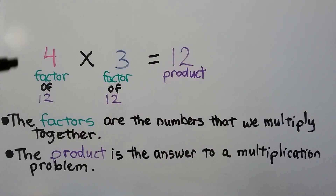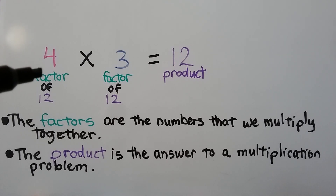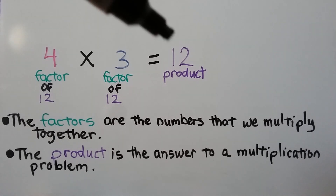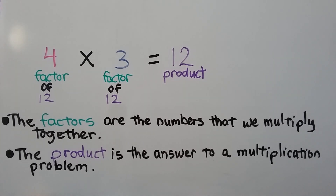The four is how many groups we have, and four is a factor of this product twelve. Three is how many is in each group, and it's also a factor of twelve. And of course twelve is the product. The factors are the numbers that we are multiplying together. The product is the answer to a multiplication problem.